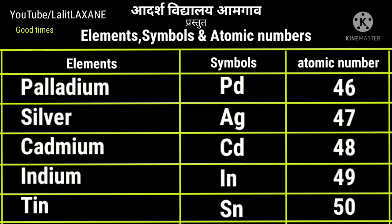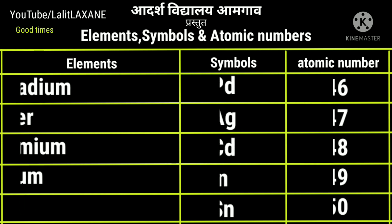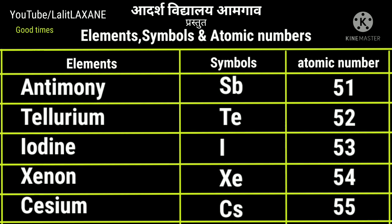Palladium Pd with atomic number 46. Silver Ag, 47 — Ag stands for argentum. Cadmium Cd with atomic number 48. Indium In, 49 and tin Sn with atomic number 50. Sn stands for stannum, that is the Latin word for tin. Then antimony with atomic number 51 and symbol Sb, that is stibium.